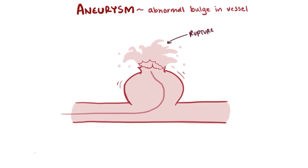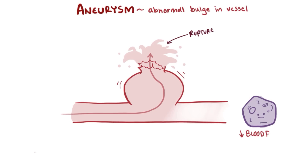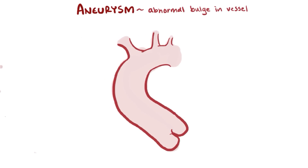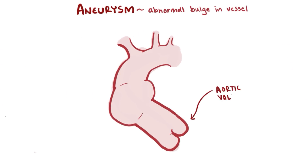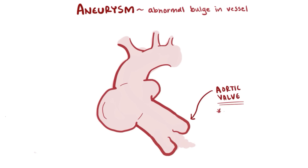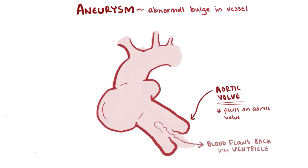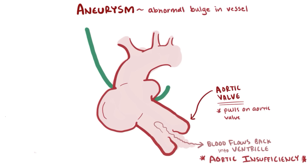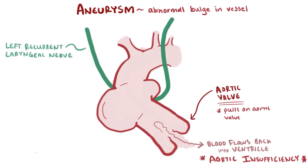When an aneurysm ruptures, it's like having a water main break — blood spews out of the hole in the blood vessel and less blood flows downstream, causing ischemia in that downstream tissue. In thoracic aneurysms specifically, a very serious complication can occur if the aneurysm is right above the aortic valve. As the aneurysm dilates, it pulls on the walls around the aortic valve, preventing it from closing properly and allowing blood from within the aorta to flow back into the ventricle during ventricular diastole. This condition is called aortic insufficiency and can also cause a high-pitched brassy-like cough because the left recurrent laryngeal nerve, which wraps around the aorta, is stretched by the expanding diameter of the aorta.